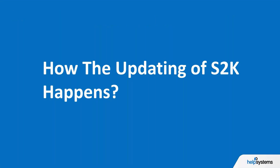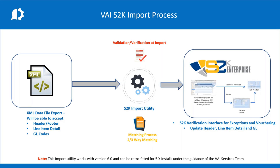A lot of questions come up about how the updating of S2K happens. Inside the process there's the S2K import utility, where all data formatted by the advanced capture system is passed for validation and verification — to see if there's a PO and supporting documentation. When that validation happens, data is passed directly into S2K for routing, and all two-way and three-way matching plus approvals happen at that back-end import process.